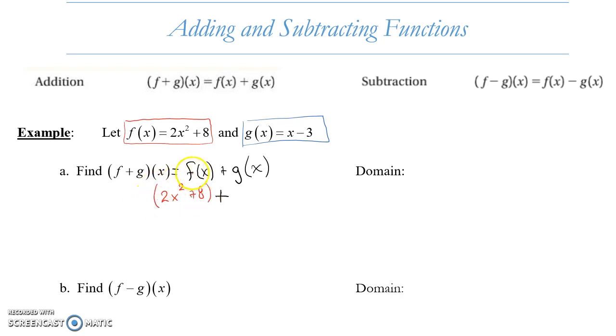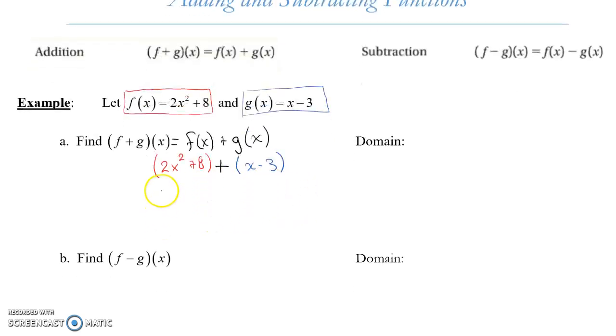I'm going to write it as a quantity, because I want to make sure I keep that together. And I'm going to add to that function g of x. But again, I'm going to write it as a quantity inside the parentheses. That's going to be my function f plus my function g. The good news is, because it's addition, I'm really just distributing an addition sign. I don't have to change any signs here. I'm going to have 2x squared plus 8 plus, because I could distribute my positive, x, distribute my positive, I get minus 3.